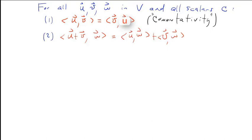Property two: the inner product of u plus v with w is equal to the inner product of u with w plus the inner product of v with w. You can think of this as a distributive property where you can distribute w to u and v, as you would in multiplication. We call this additivity.